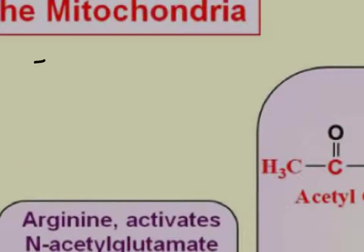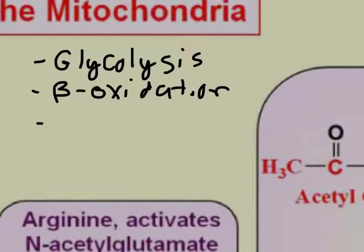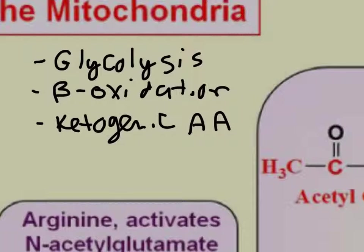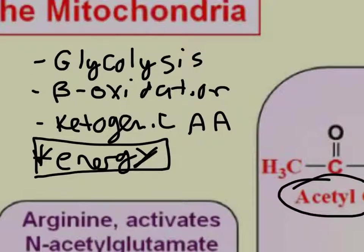You get acetyl-CoA from glycolysis, from beta-oxidation of fats, and from the breakdown of ketogenic amino acids. These things are primarily broken down for energy, so if your body doesn't have enough energy, you're not going to have enough acetyl-CoA, and if you don't have enough acetyl-CoA, you're not going to make urea.